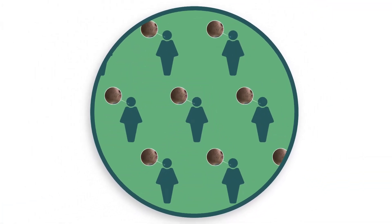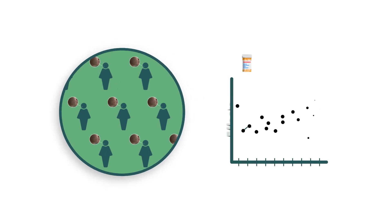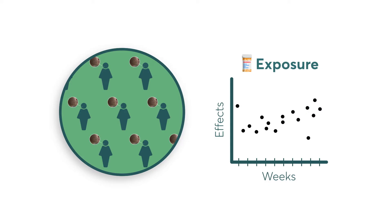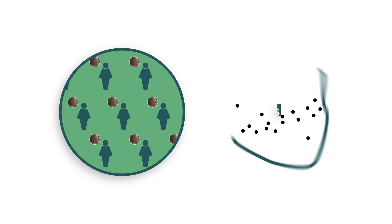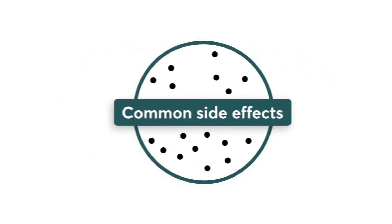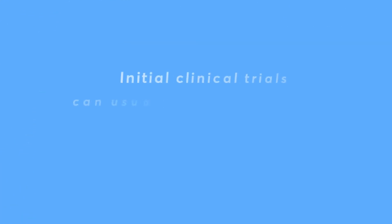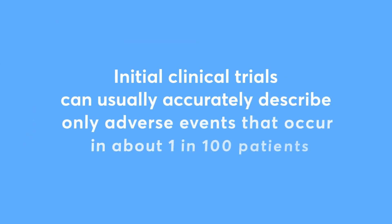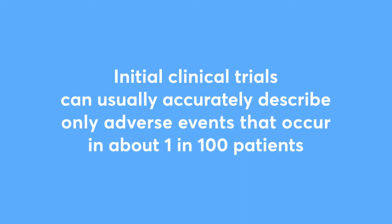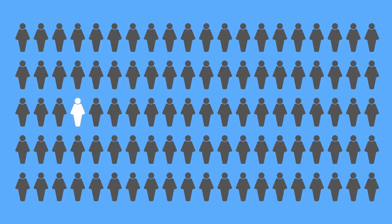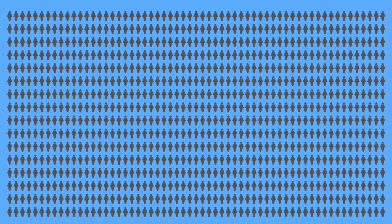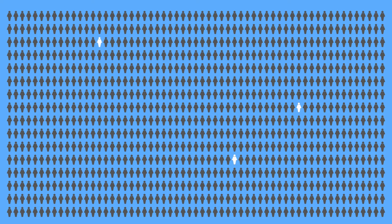Furthermore, initial randomized controlled trials typically monitor exposure to the medication over a period of only weeks to months, providing minimal information on the safety of long-term exposure. Finally, randomized controlled trials are designed to detect relatively common side effects and may not pick up rare events. As a result, initial clinical trials can usually accurately describe only adverse events that occur in about 1 in 100 patients.